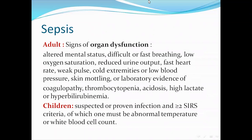Another presentation of novel coronavirus is sepsis — adults with organ dysfunction such as altered mental status, difficult or fast breathing, low saturation, reduced urine output, fast heart rate, weak pulse, cold extremities, low blood pressure, skin mottling, or laboratory findings such as coagulopathy, thrombocytopenia, acidosis, high lactate, or hyperbilirubinemia. In children, sepsis is suspected or proven infection plus two or more criteria of SIRS, of which one must be abnormal temperature or white blood cell count.